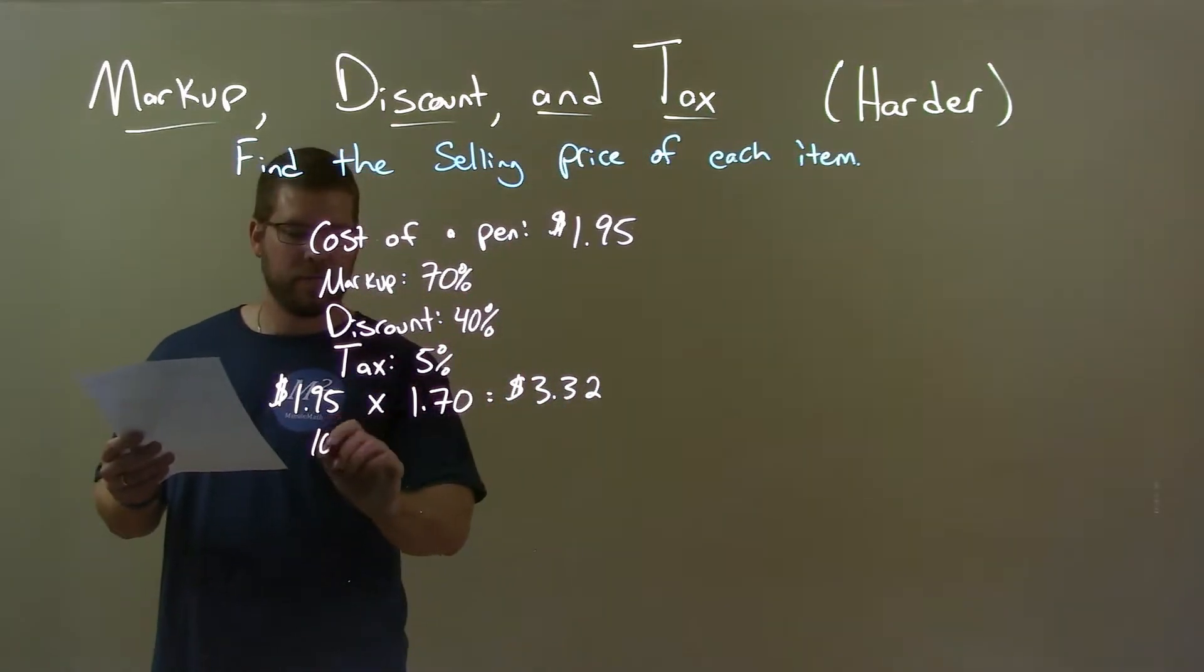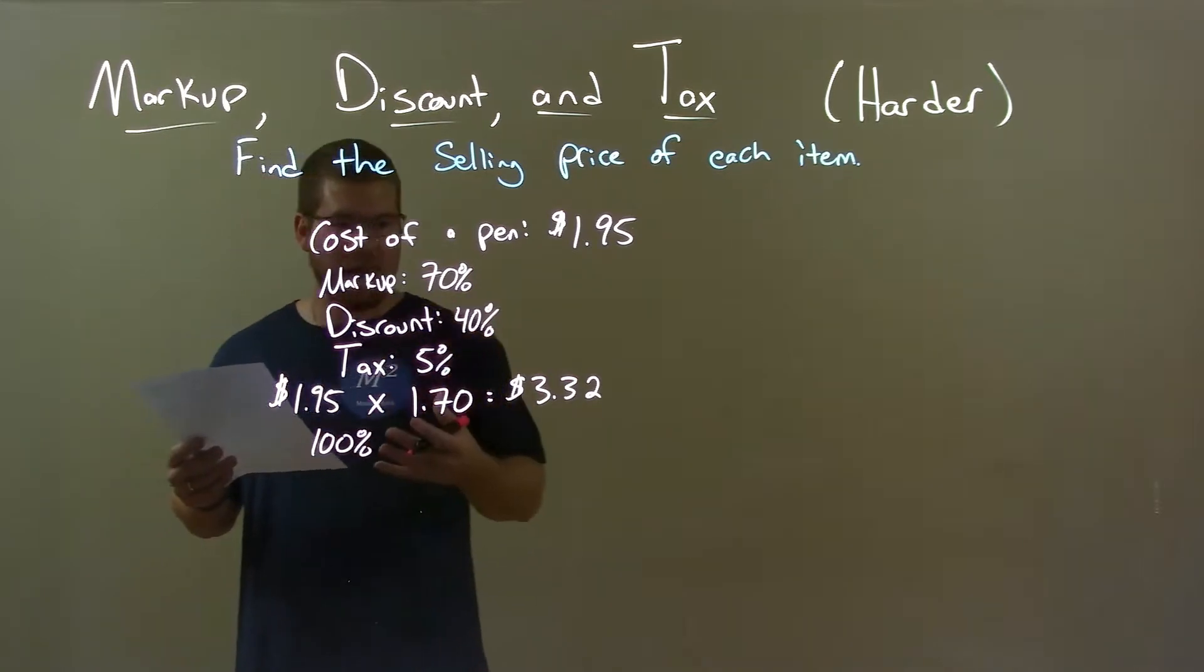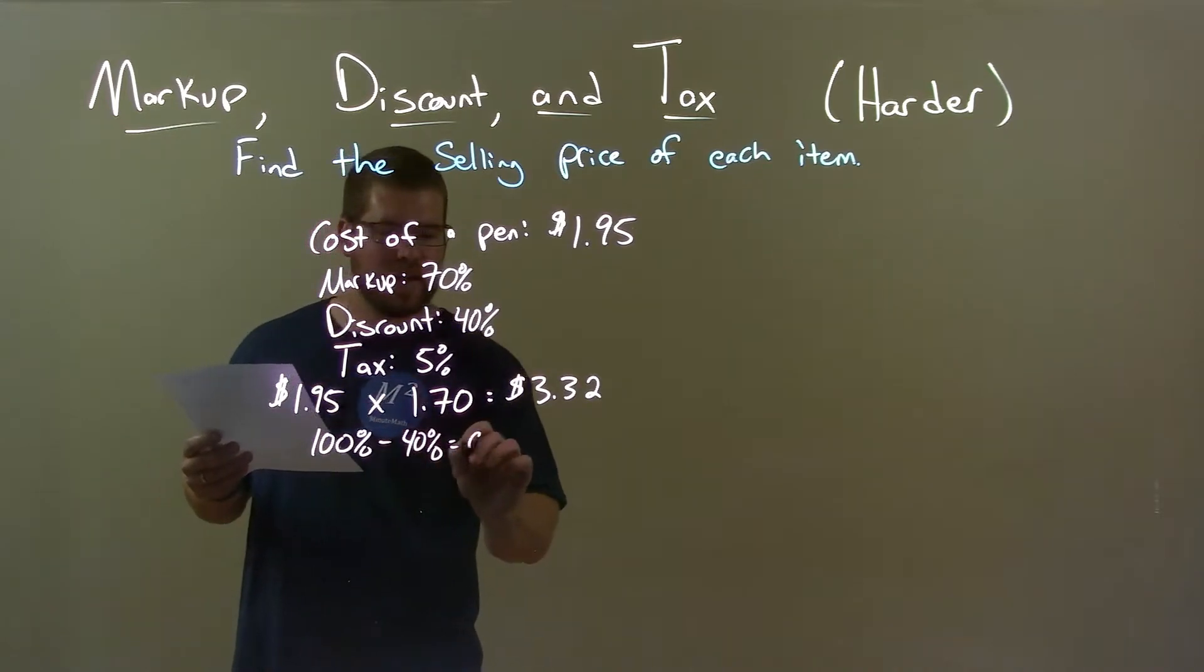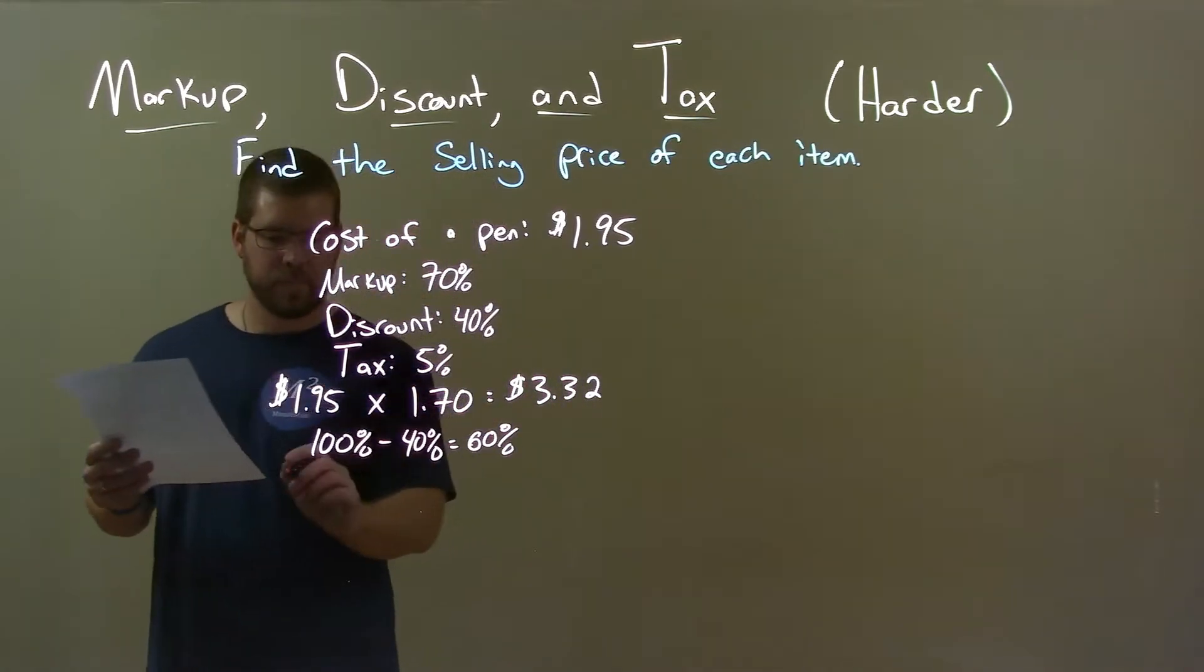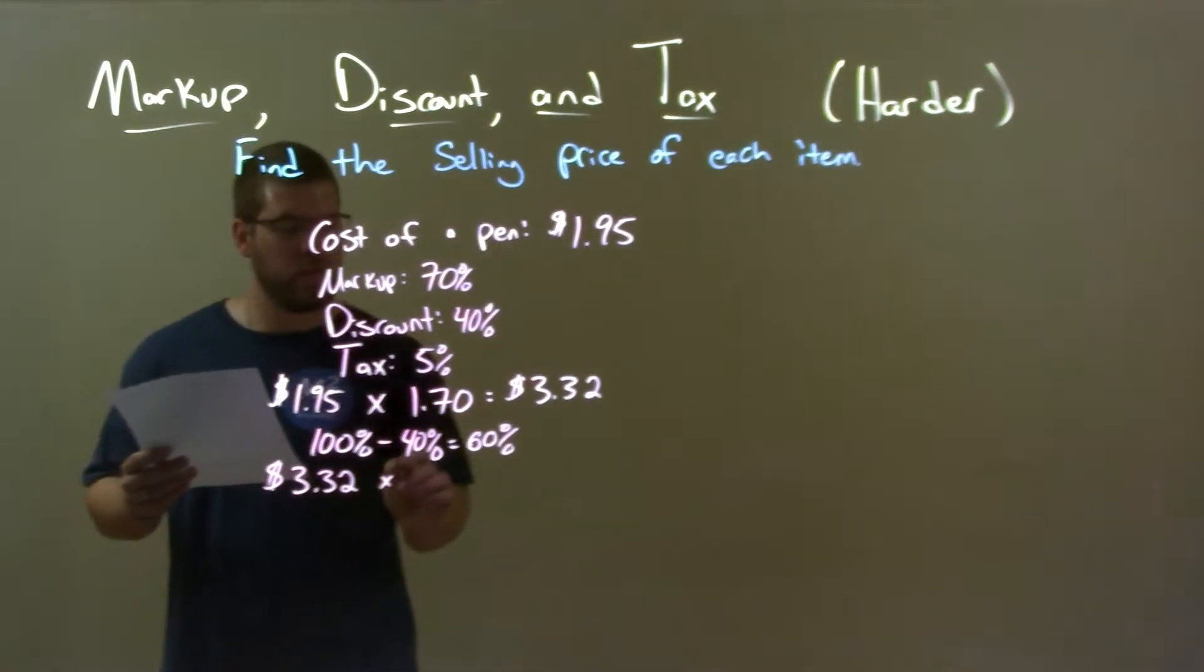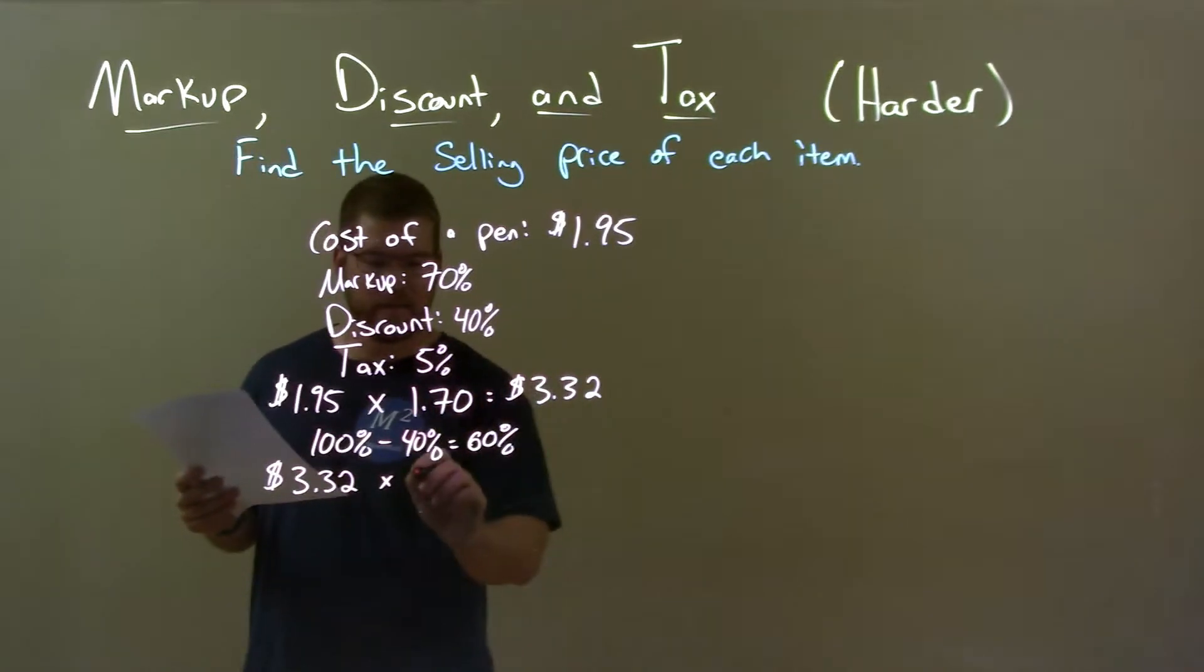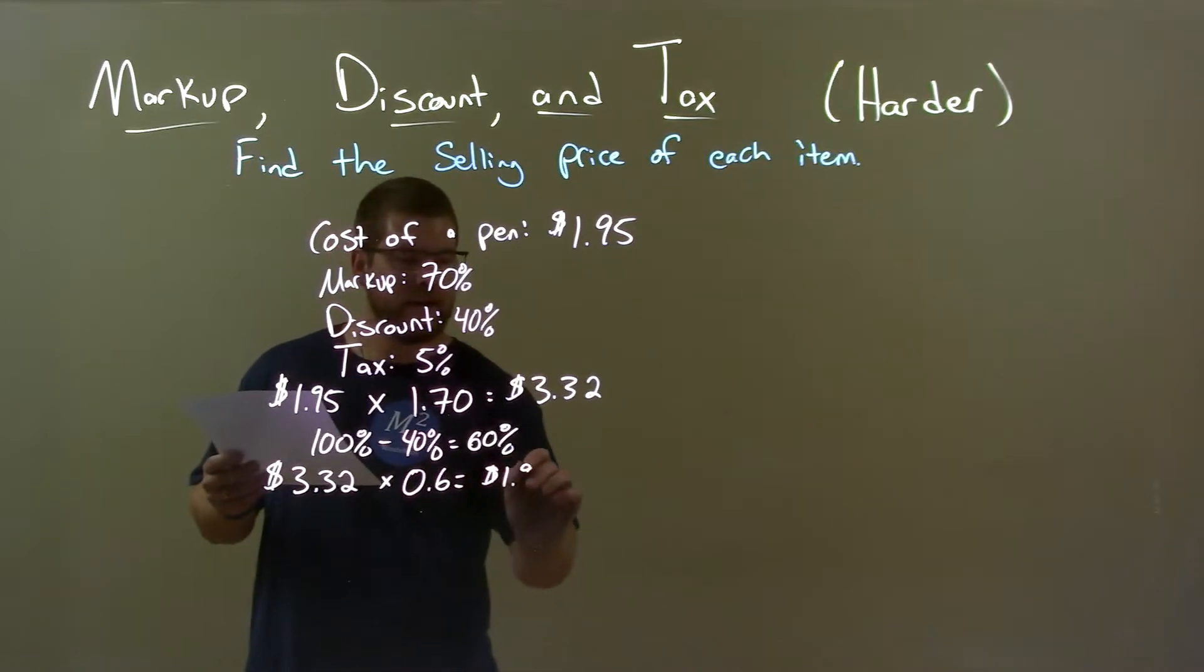Well, 40% discount, we wanna find how much of the original price we're gonna pay with the 40% discount. So, we take 100% minus the 40% and that gives us 60%. So, we're gonna pay 60% of that. And that's how we get the 40% discount. So, we take the $3.32 and multiply that by our 60%, that percent we're gonna pay as a decimal, 0.6, which comes out to be $1.99.